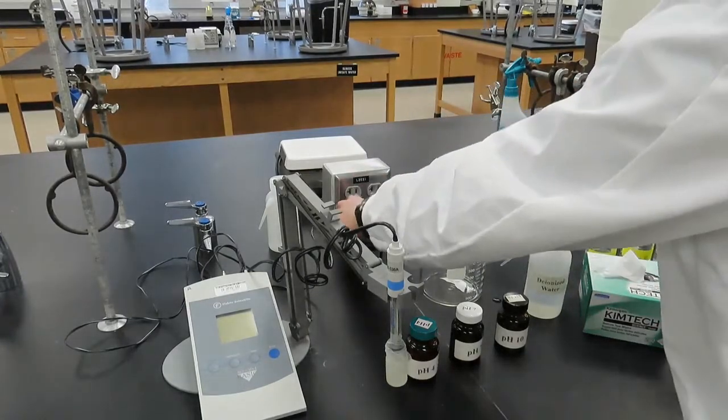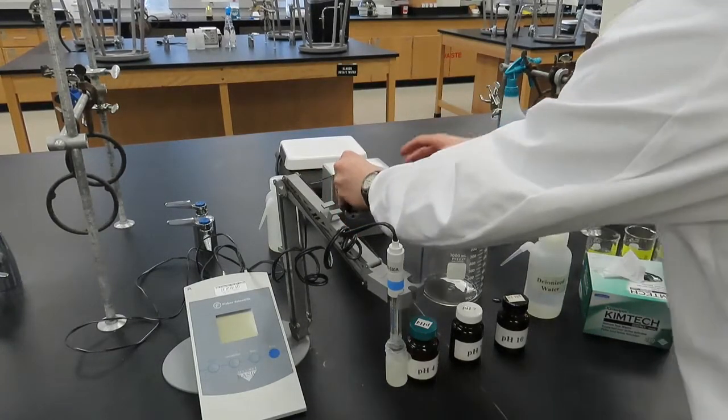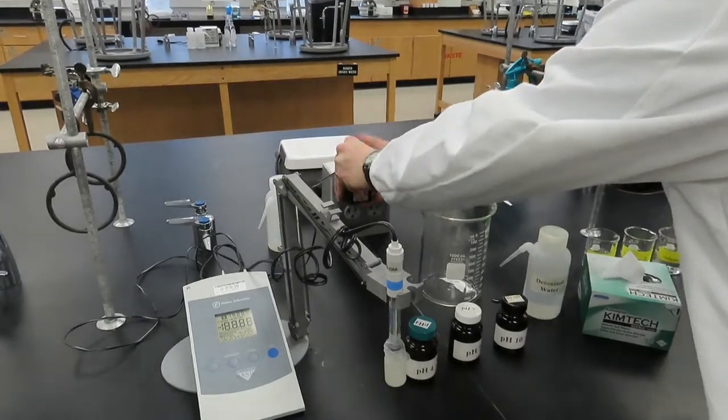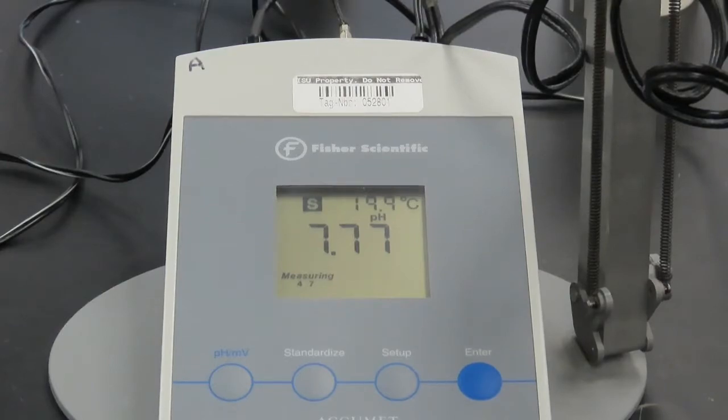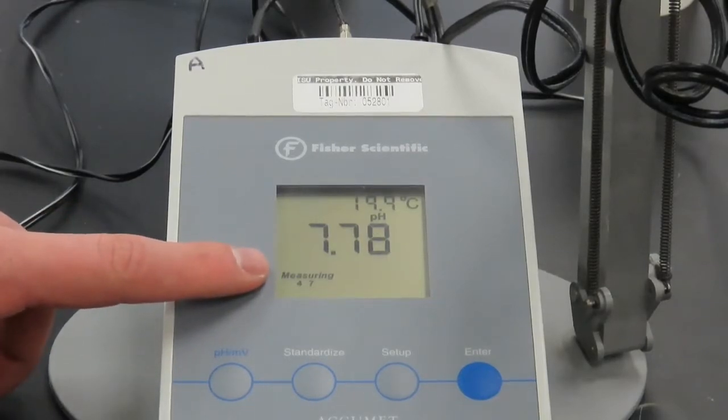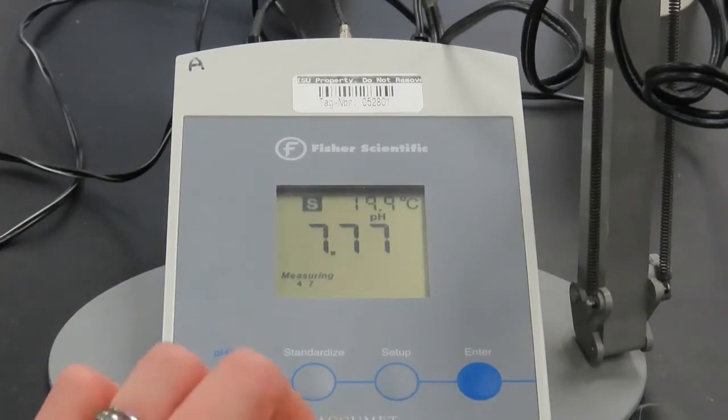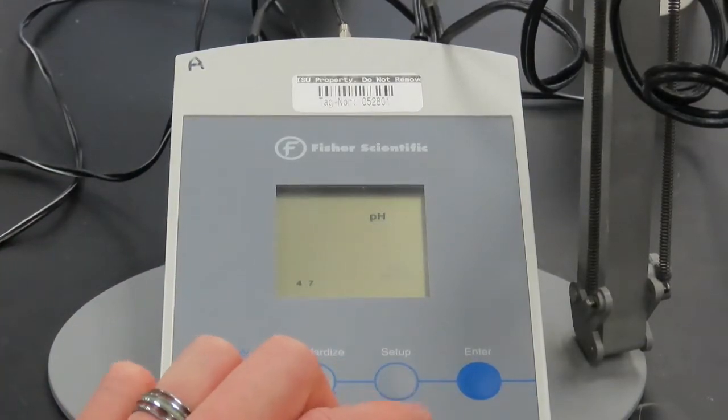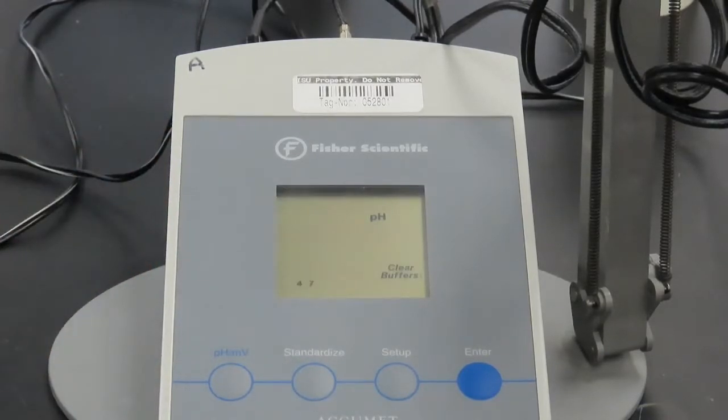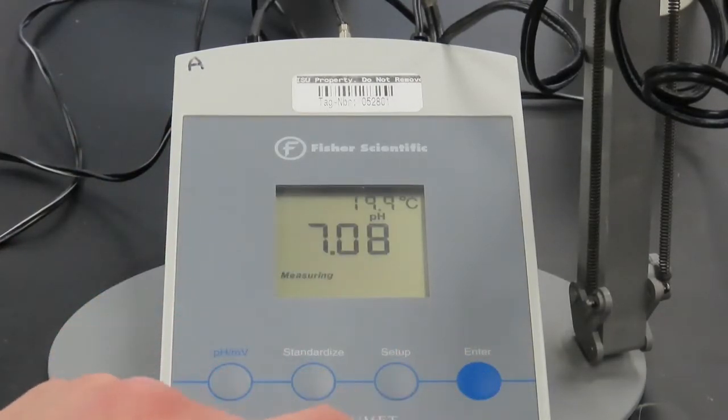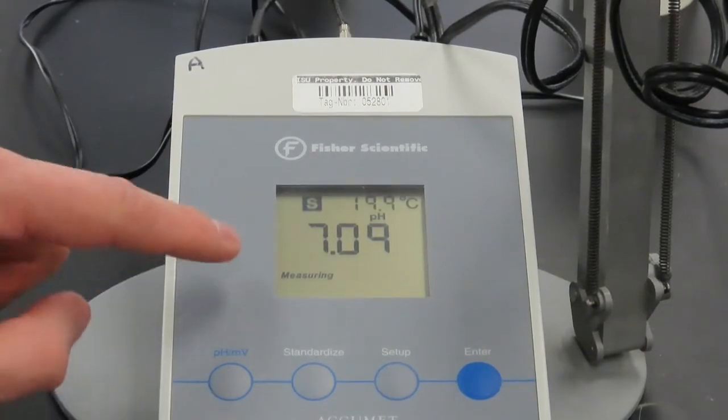To begin, we'll first plug in the pH meter. When first turned on, the lower left corner of the display usually shows a couple of numbers, 4 and 7 in this case. These are the pH values of the buffers that were last used to calibrate this instrument. A calibration is no longer valid. We will first clear the buffers by pressing the setup button and then the enter button. The pH meter is now ready to be calibrated.